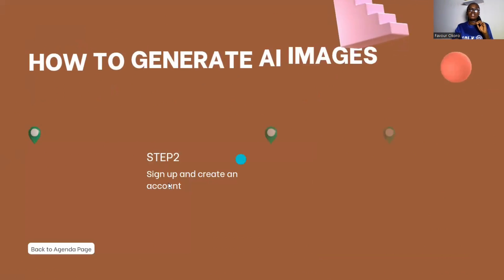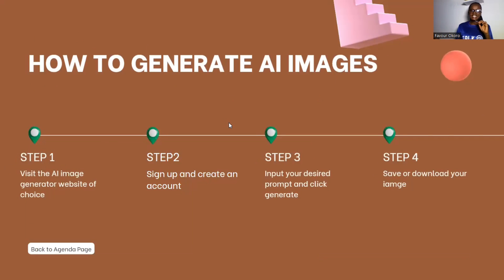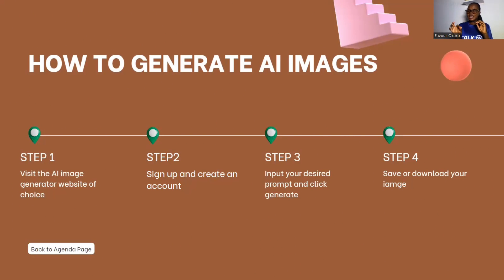Here is the simple step-by-step process to generate AI images. Step one: visit the AI image generator website of your choice. Step two: sign up and create an account. Step three: input your desired prompt and click generate. Step four: save or download your image. Simple and short — let me show you exactly how to get this done.